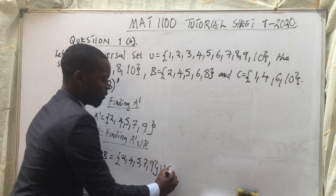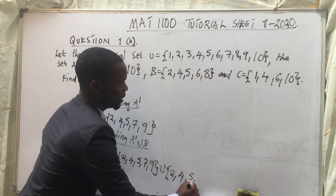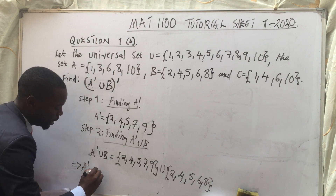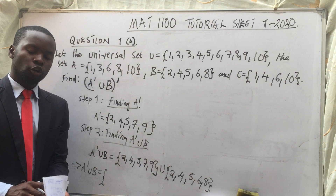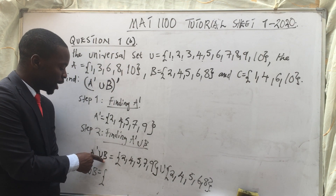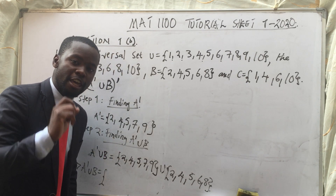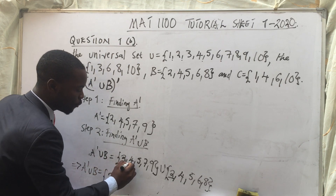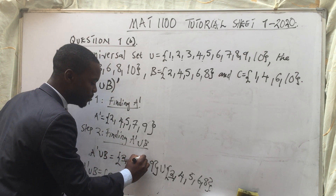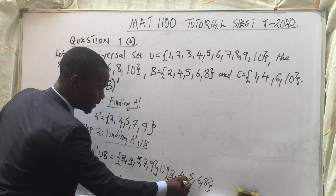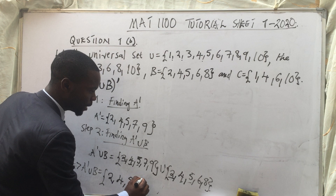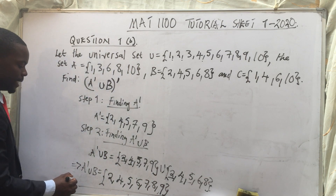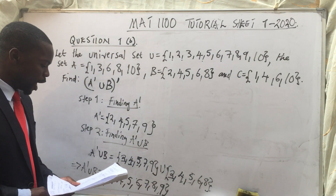Set B is {2, 4, 5, 6, 8}. A complement union B means we combine the elements in A complement and B without repeating any element. Since 2, 4, and 5 appear in both, they are written only once. So A complement union B = {2, 4, 5, 6, 7, 8, 9}.